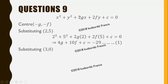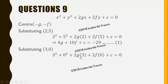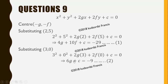Then we repeat the same process for the point (3, 0), because it is also lying on this circle. When we substitute for x and y, we obtain 3 squared plus 0 squared plus 2g times 3 plus 2f times 0 plus c equal to zero. When we simplify, we get 6g plus c equals negative 9. Let's call this equation 2.